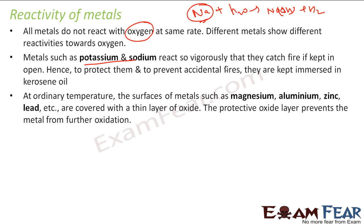The next kind of metals — manganese, aluminium, zinc, lead — these metals react, but they do not react much because they form an oxide layer to prevent further oxidation, and that is called anodizing. For example, aluminium forms Al₂O₃ oxide, and this protective layer prevents it from reacting further. So ultimately, the aluminium metal does not react much because it has this aluminium oxide coating.